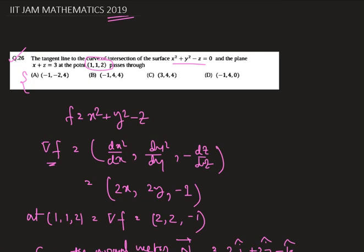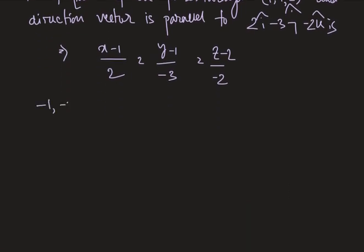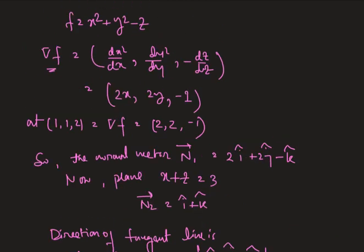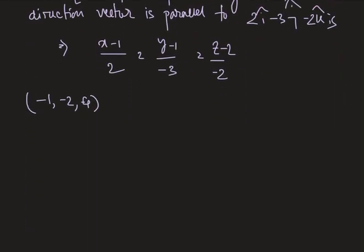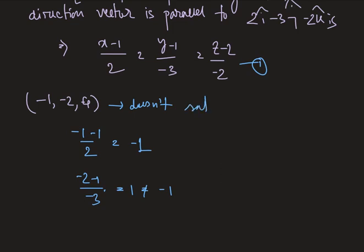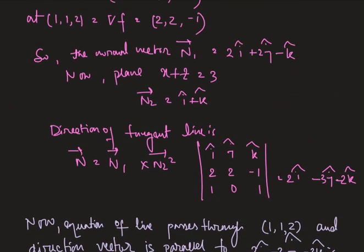Now we have to check for each and every given option whether it is correct or not. The first point is minus 1, minus 2, and 4. So let's check whether it is correct or not. For checking the correctness of this point we put this point in this equation. So minus 1 minus 1 divided by 2 which results in minus 1, and minus 2 minus 1 divided by minus 3 which equals 1, which is not equals to minus 1. Therefore it does not satisfy the equation. Therefore this is a wrong answer.